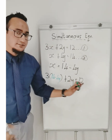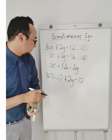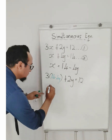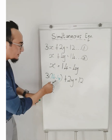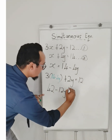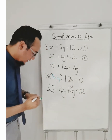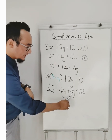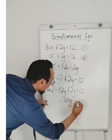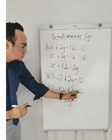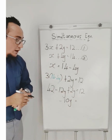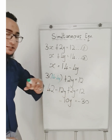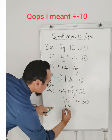Now I solve for y. I have 14 multiplied by 3, which gives me 42. Then 3 multiplied by negative 4y is negative 12y, plus 2y, and that is equal to 12. Collecting like terms: negative 12y plus 2y is negative 10y. If I take the 42 over, it's 12 minus 42, which is negative 30. So negative 10y equals negative 30 — divide by negative 10 on both sides — and therefore y is equal to 3.